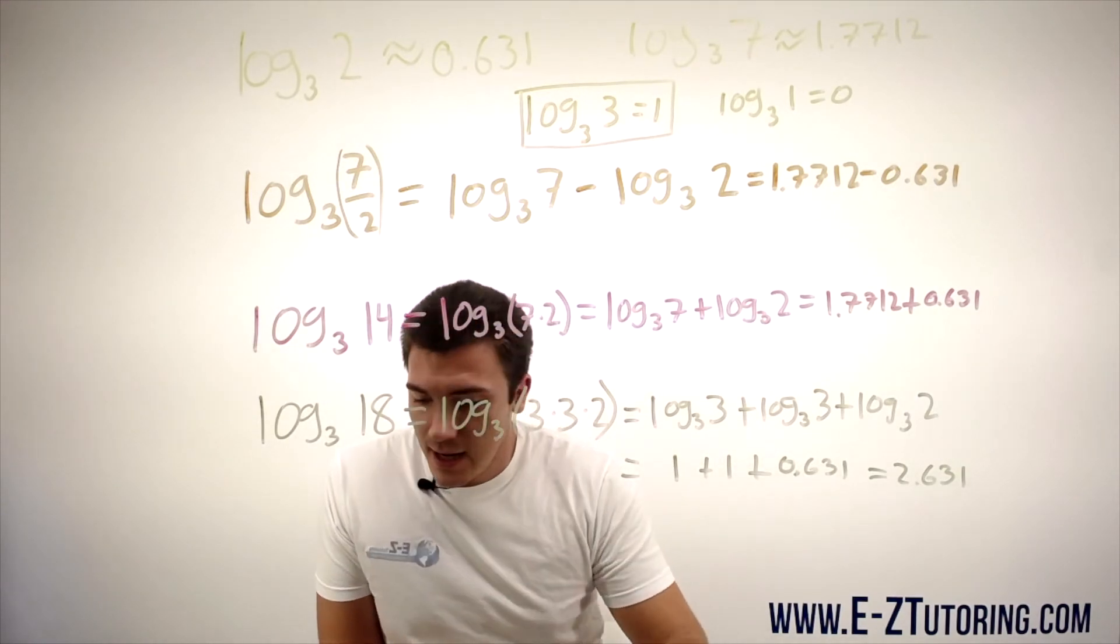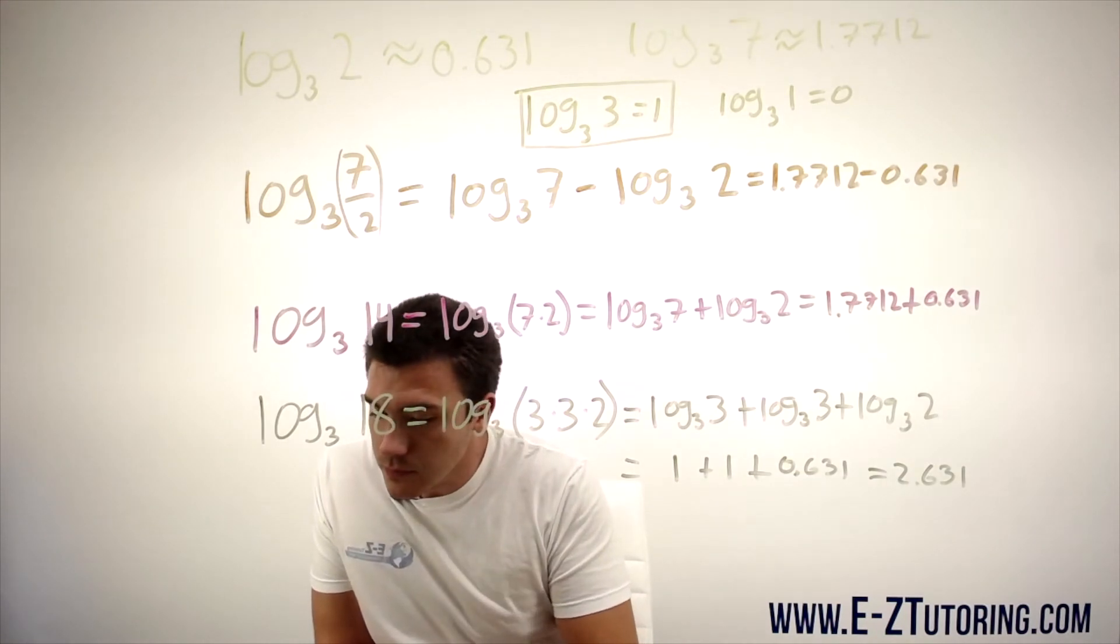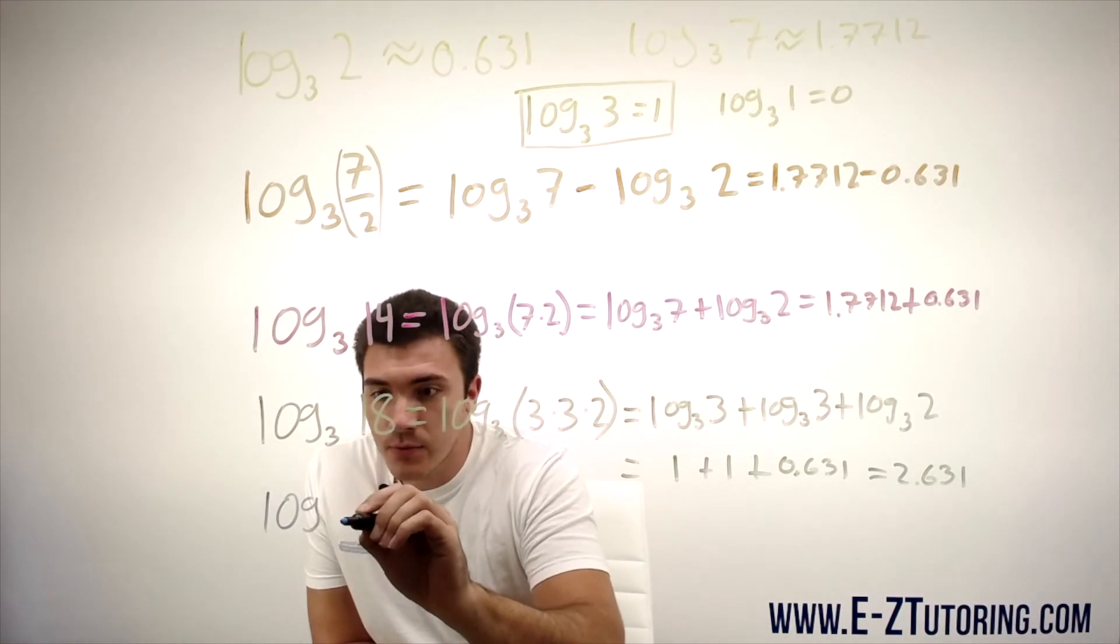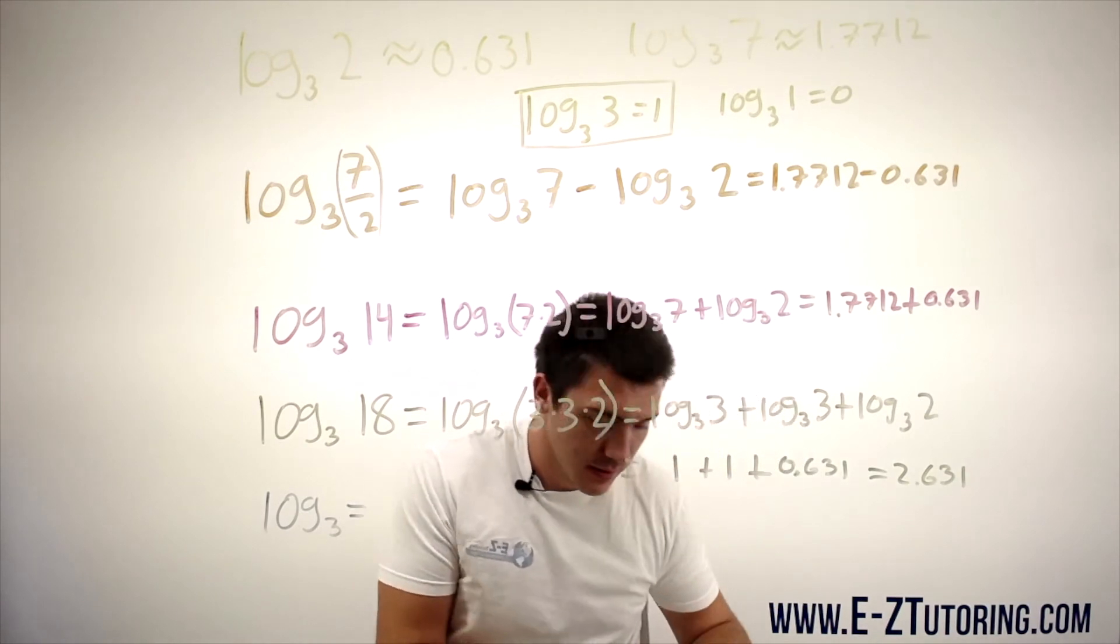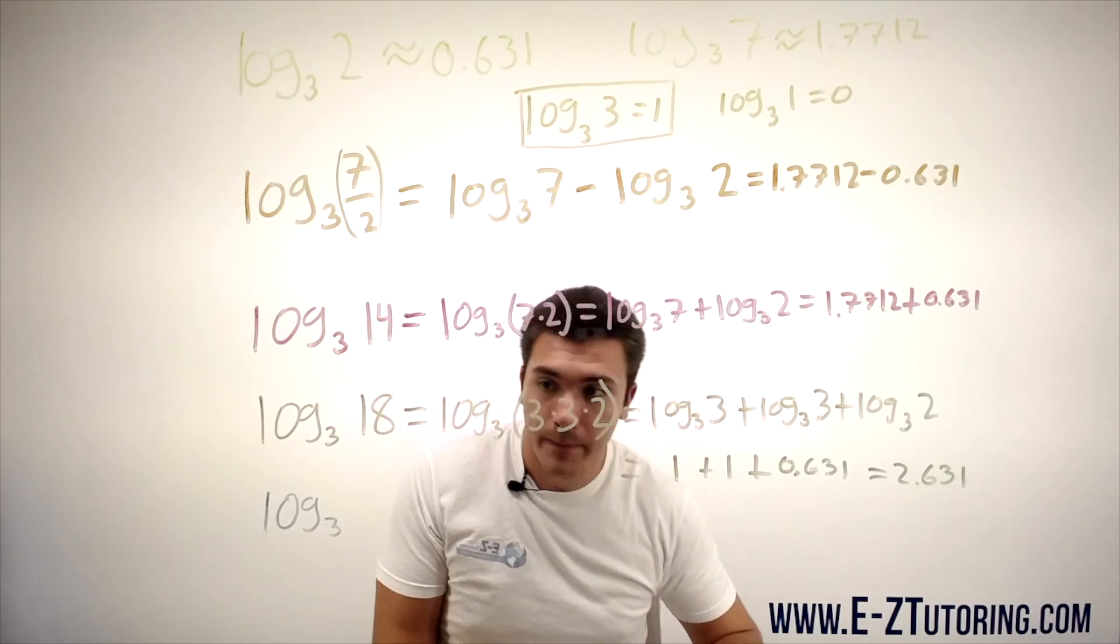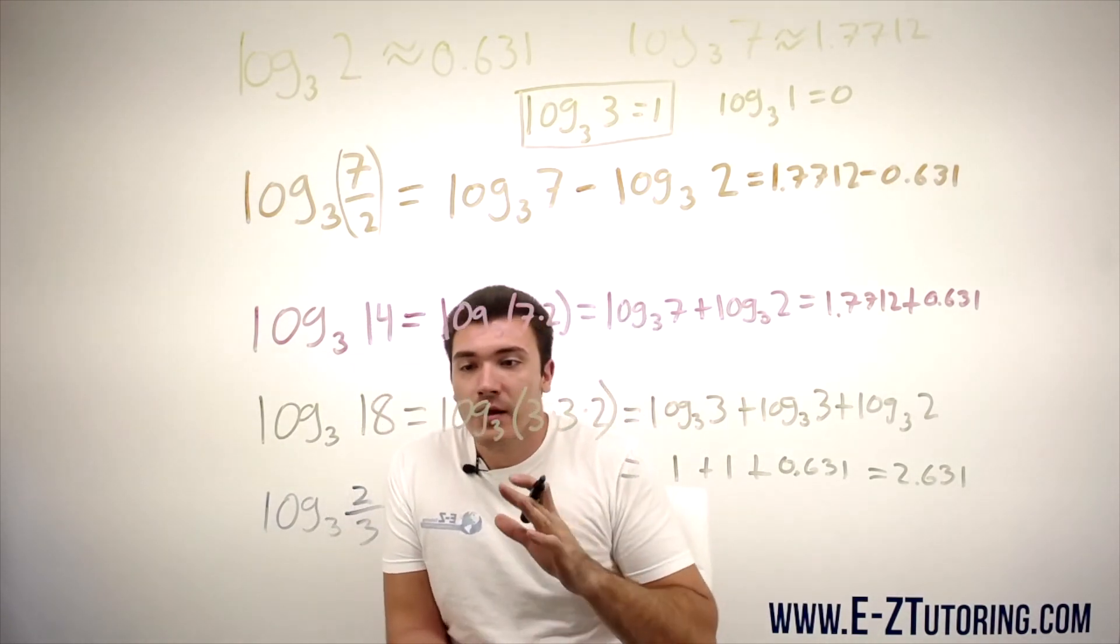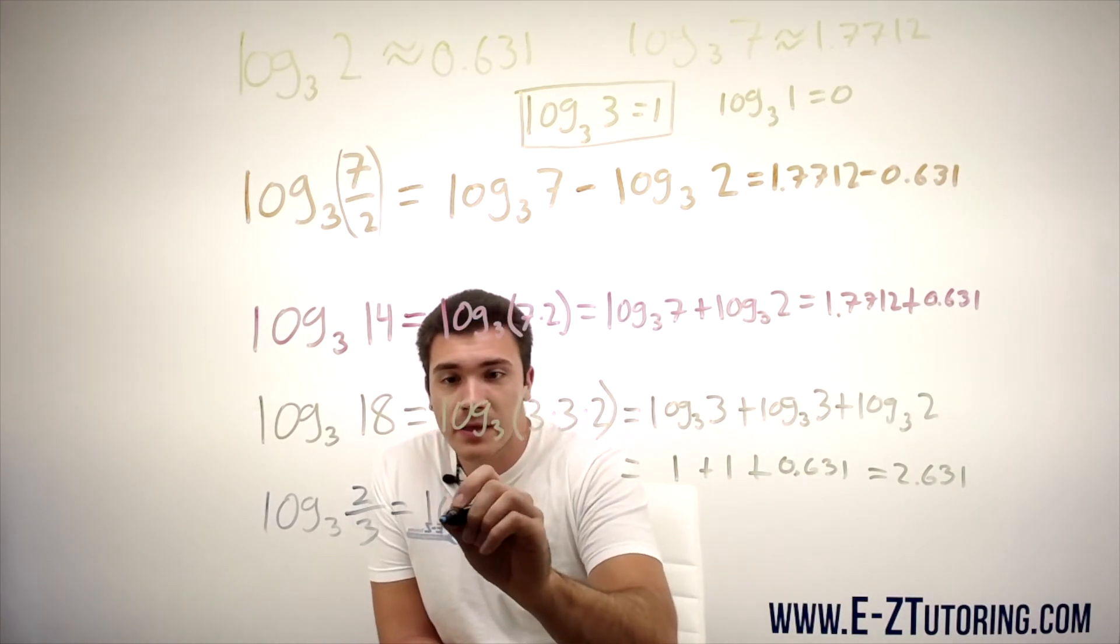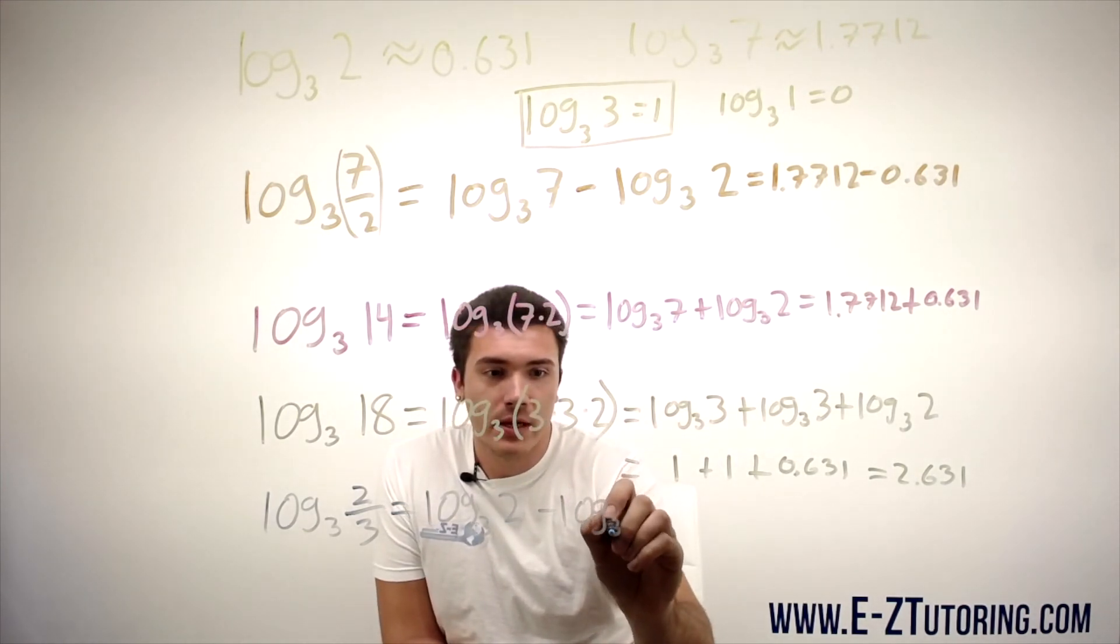Let's go ahead and do one more. Let's do log base 3 of 2 over 3. So once again, this is division. We use the logarithmic rule of division to split this up into log base 3 of 2 minus log base 3 of 3.